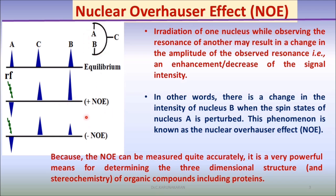If the signal increases — if the amplitude increases — it is called positive nuclear Overhauser effect. If the signal of the B proton decreases, then it is called negative nuclear Overhauser effect.